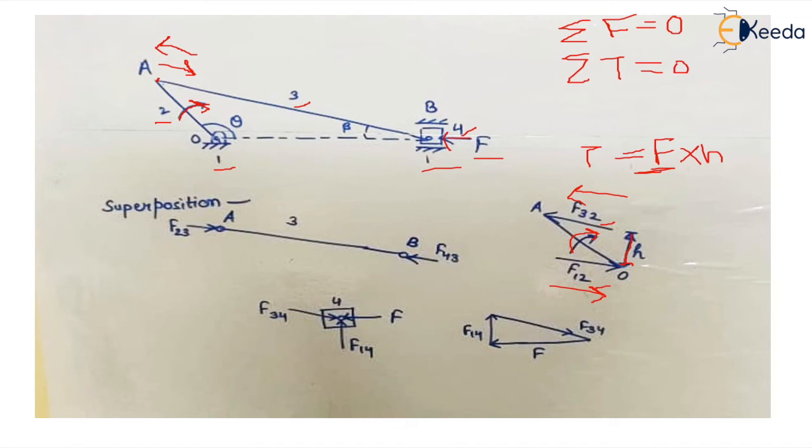When we come to body 3, there is no externally applied force—only reaction forces are there, and it is connected at two points. So there will be the condition for two-force members: two equal and opposite forces acting on it, which are basically the reactions because of two connections. F23, the force on body 3 because of 2, and the force on body 3 because of 4 will be equal but opposite in direction.